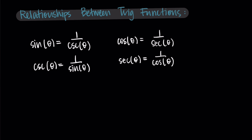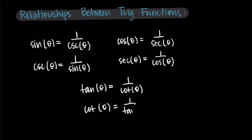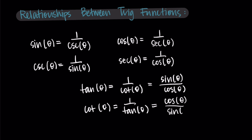Then for our third grouping, we have that tangent of theta is equal to one over cotangent of theta, and that cotangent of theta is equal to one over tangent of theta. We have an additional set of identities here. We can say that tangent is also equal to sine over cosine, and that cotangent is equal to cosine over sine. These are our relationships between the trig functions. We also call them identities because we're saying that these two things are basically identical — sine is the same as one over cosecant, that sort of thing.